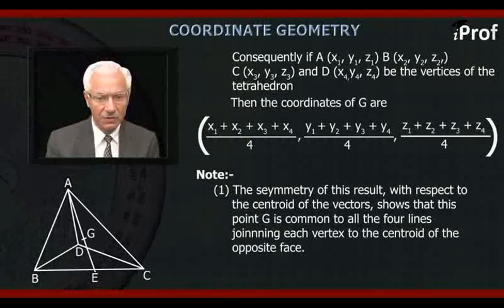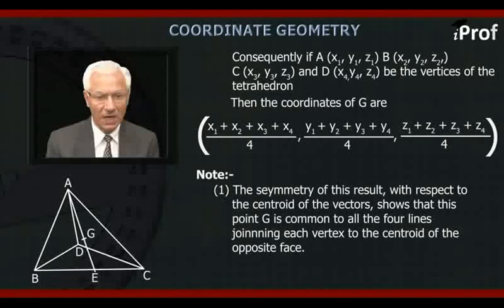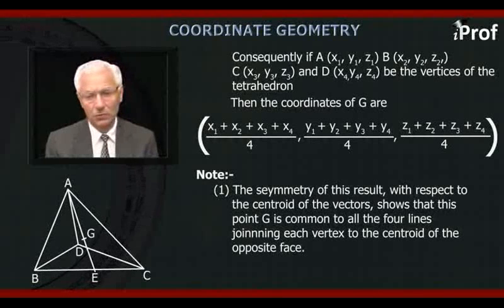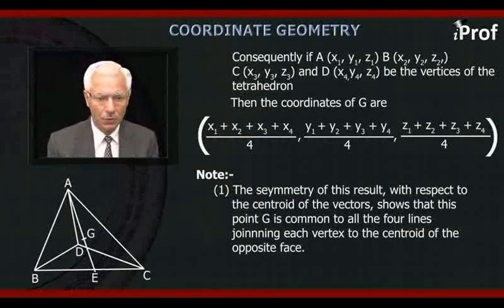then the coordinates of G are X1 plus X2 plus X3 plus X4 by four, Y1 plus Y2 plus Y3 plus Y4 by four, and Z1 plus Z2 plus Z3 plus Z4 by four.